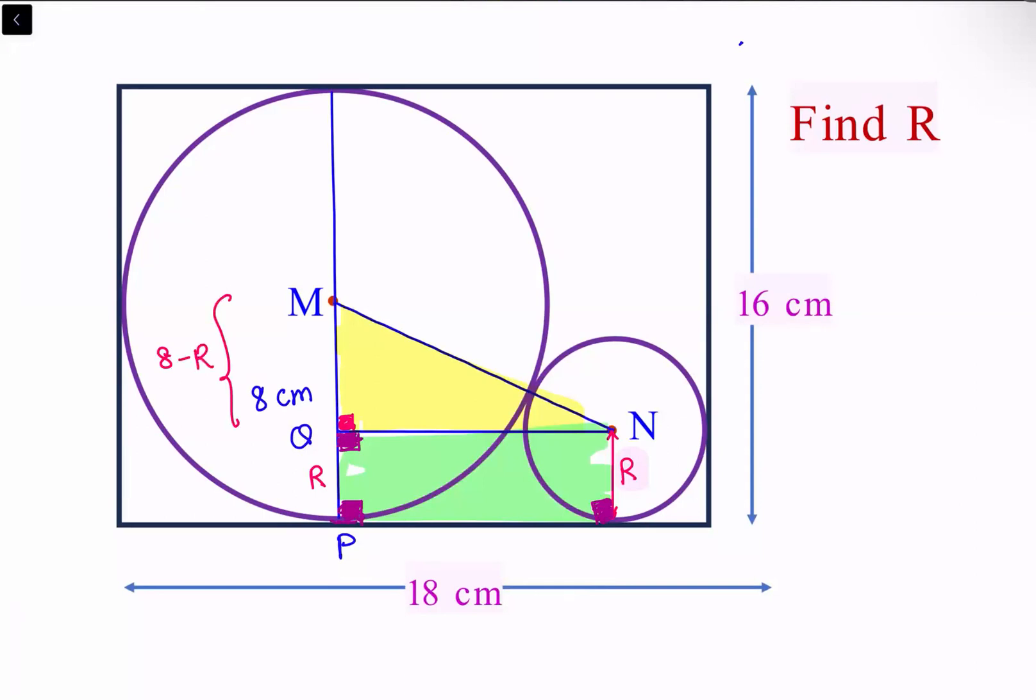Now we need to work out the other side. For MN, we have the radius of the larger circle which is 8 centimeters, plus the smaller radius R. So MN is 8 plus R.